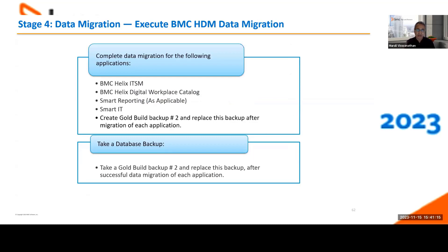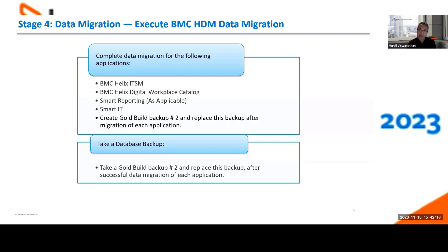The HTM tool supports ITSM, Digital Workplace Catalog, Smart Reporting (as applicable), and Smart IT. At stage three during development activities, you take golden backup one. Now you complete your data migration for all these products — and we encourage you to take golden backup two after completing the ITSM migration before running Digital Workplace Catalog migration. This gives you a good starting point. If something goes wrong during Digital Workplace Catalog migration, you have a backup to restore to. We strongly encourage taking backups after each product migration so that at the end you have a backup with all data migrated.